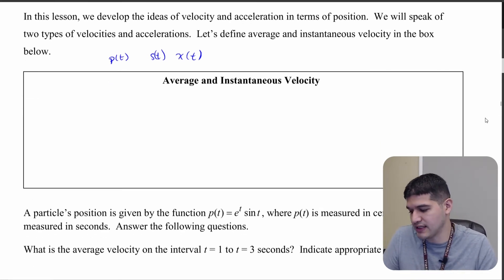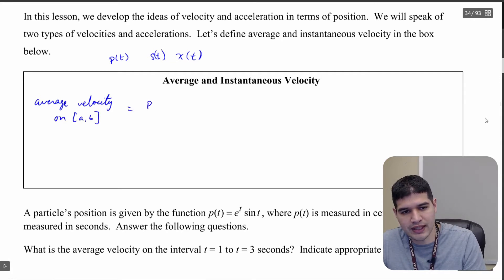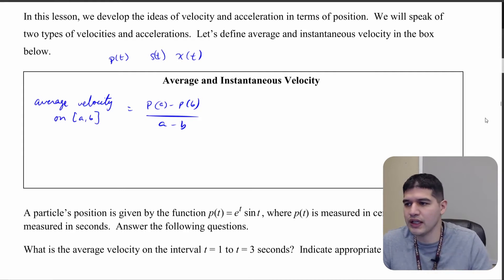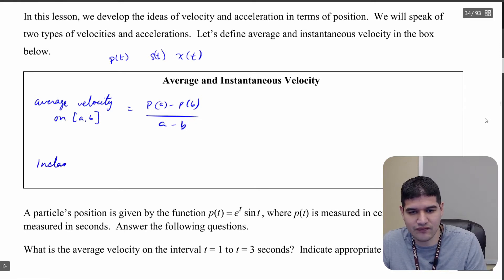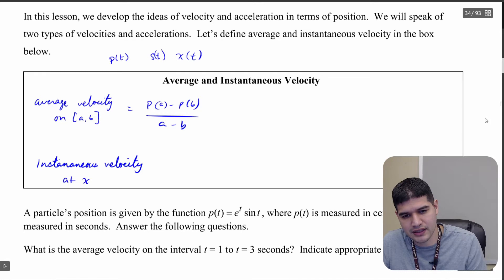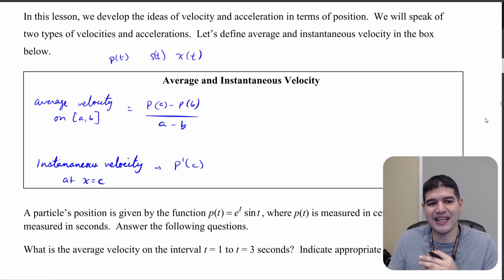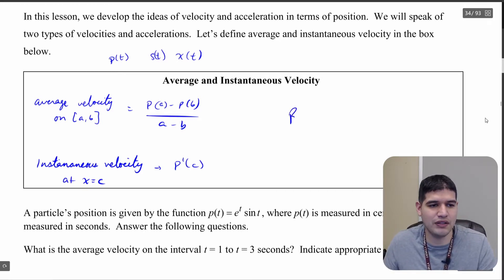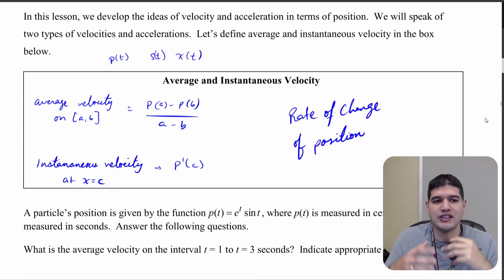So what is average velocity? If we have the average velocity on the interval from a to b, that's going to be p of a minus p of b over a minus b. That should look pretty familiar. And if we're talking about instantaneous velocity at x equals c, we just want p prime of c. Velocity is the rate of change of the position.